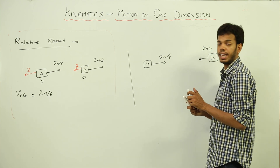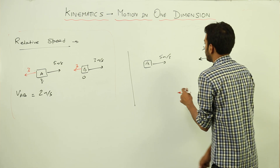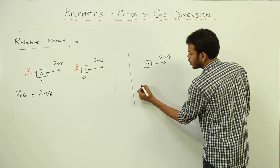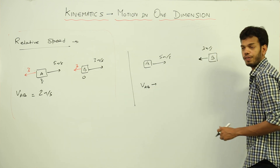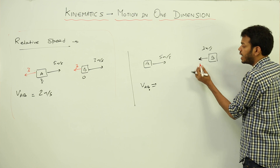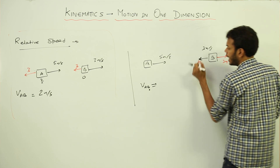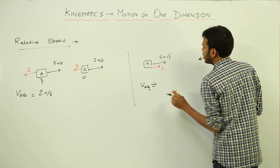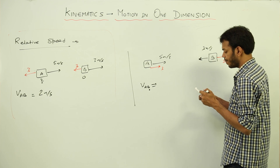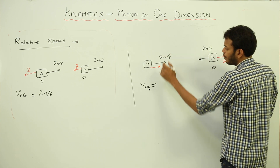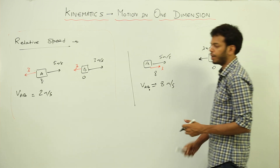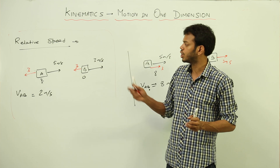Now for the opposite direction scenario, I still want to find the velocity of A with respect to B, so I apply the negative velocity of B onto the whole system. B is moving in one direction, so the negative velocity of B is in the opposite direction — magnitude 3. B's speed becomes 0 and A's net speed becomes 5 plus 3, which is 8. So the velocity of A with respect to B is 8 m/s.